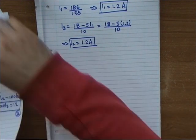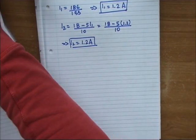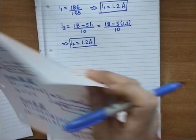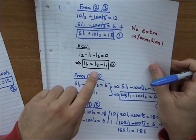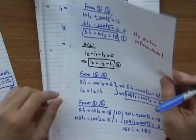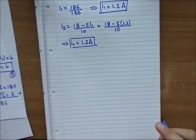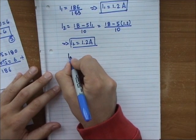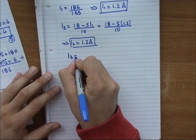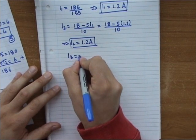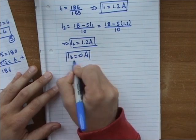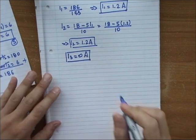And by using KCL we find that I3 = I2 - I1 = 1.2 - 1.2 = 0 amps.